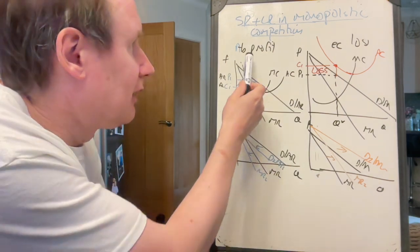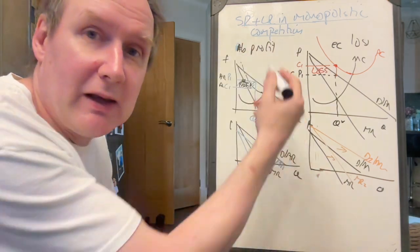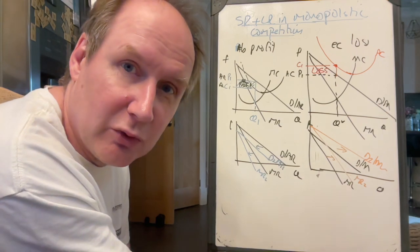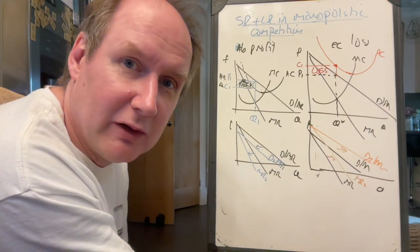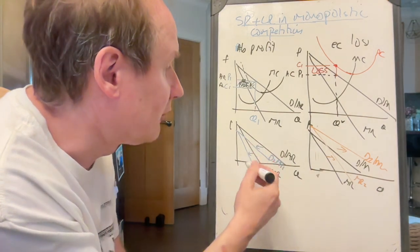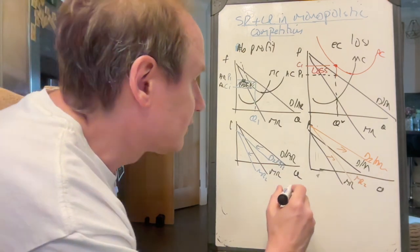Well, here we're making abnormal profits. It's that that attracts firms into the industry. Here we're making losses. That's what's causing firms to leave. Well, the firm can just make normal profit. There's now no incentive for firms to enter the market, no incentive for firms to leave the market.